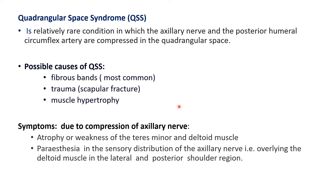The main symptoms of quadrangular space syndrome concern compression of the axillary nerve. The axillary nerve supplies teres minor and deltoid muscles, so there may be atrophy or weakness of those muscles. Additionally, paresthesia and tingling sensations can occur in the distribution area of the axillary nerve, which overlies the deltoid muscle in the lateral and posterior shoulder regions.